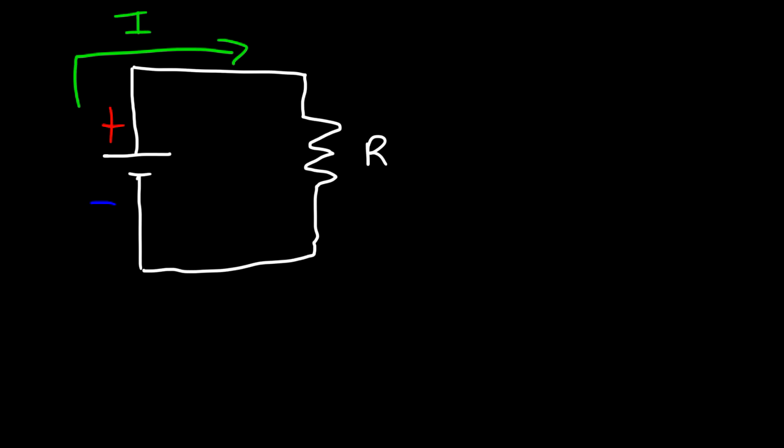That's the definition for conventional current. Electrons flow in the opposite direction. Keep in mind that for metal, electrons are the charge carriers.